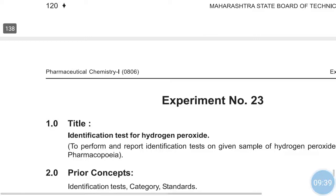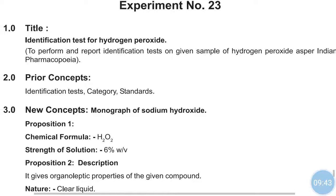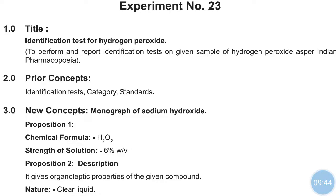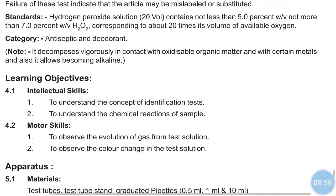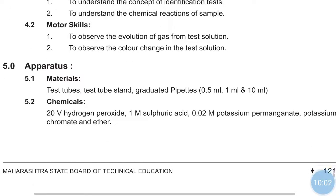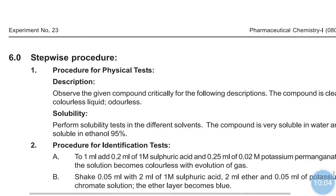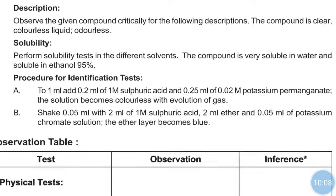The next compound for the identification test is hydrogen peroxide. Hydrogen peroxide (H2O2) is a topical agent we had seen in the topical agents chapter. Its category is antiseptic and deodorant. Now see the identification tests for hydrogen peroxide.